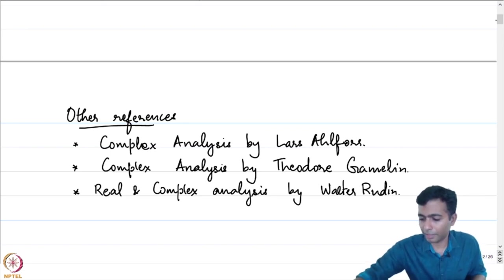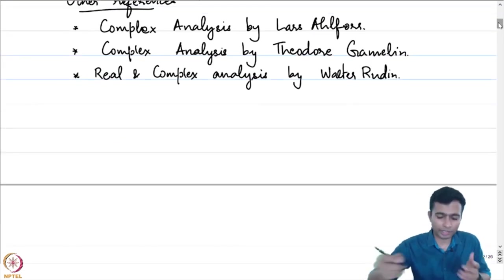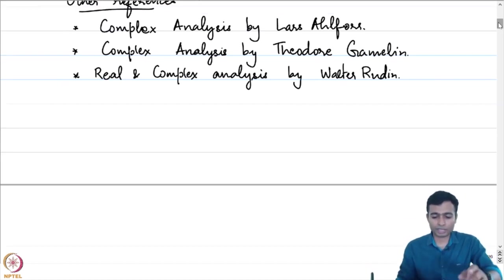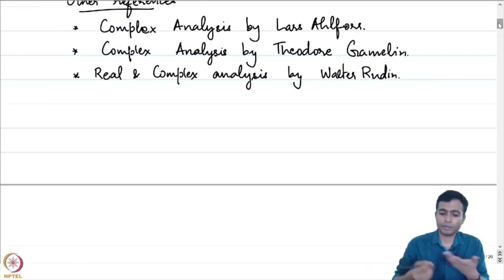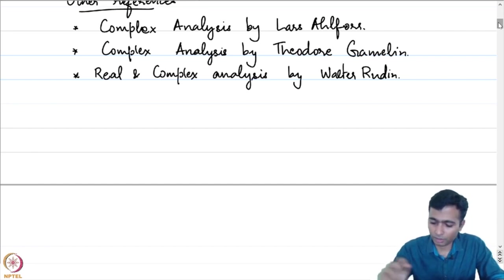There is also this fantastic book, Real and Complex Analysis with a slightly different approach, by Walter Rudin. Of course, there are many more books. I would also suggest that you refer to these other references in maybe a second or a third reading.